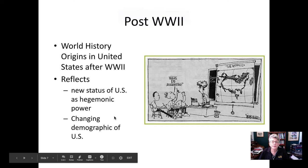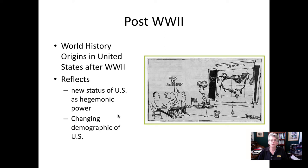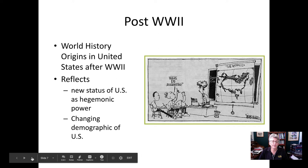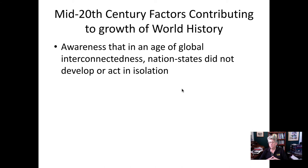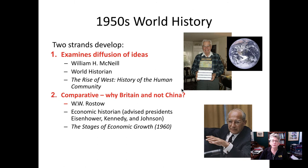So now we get to the U.S. After World War II, the U.S. is the dominant country, along with the Soviet Union. Its perspective on world history starts to change as a result of both its new power and the changing demographics of the U.S. In the mid-20th century, there are a number of factors contributing to the growth of world history, and people are more aware of the connectedness within world history. In the 1950s, we see two strands develop.